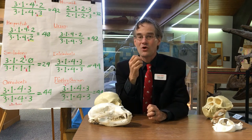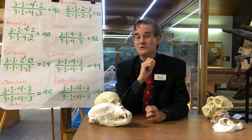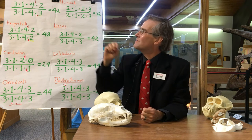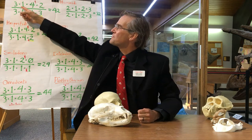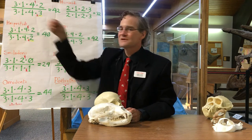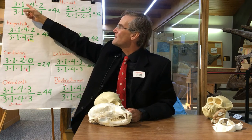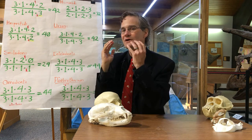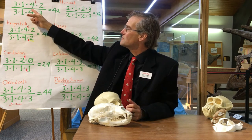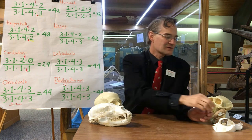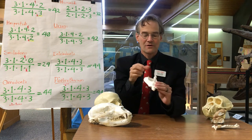Let's take an example that's probably familiar to you: the domestic dog, Canis familiaris. There may be one of these in your own house. If your dog trusts you enough to open up its mouth and count its teeth, you'll find that it has three incisors on each side of its upper jaw and three incisors on each side of its lower jaw. On the top and on the bottom there's one canine; on the top there are four premolars on each side and two molars. In the bottom jaw you've also got four premolars but three molars.